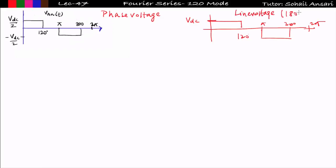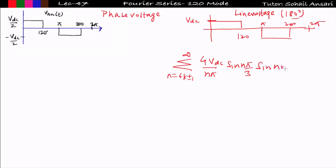I already derived the Fourier series expression of the line voltage in 180-degree conduction mode. It is: summation for n = 6k ± 1 to infinity of (4Vdc / nπ) · sin(nπ/3) · sin(nω₀t + nπ/6). This is the Fourier series expression of line voltage in 180-degree conduction mode.